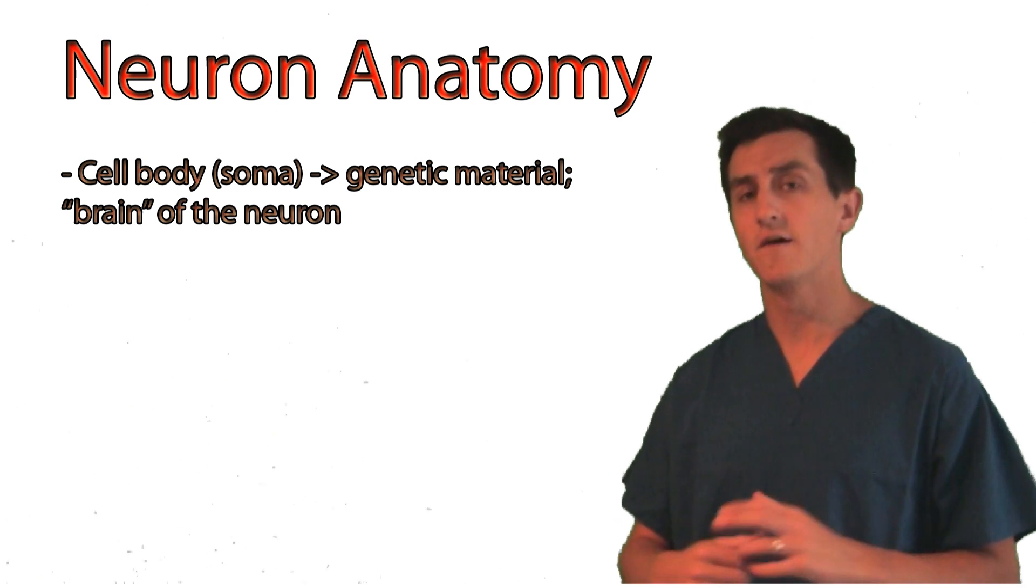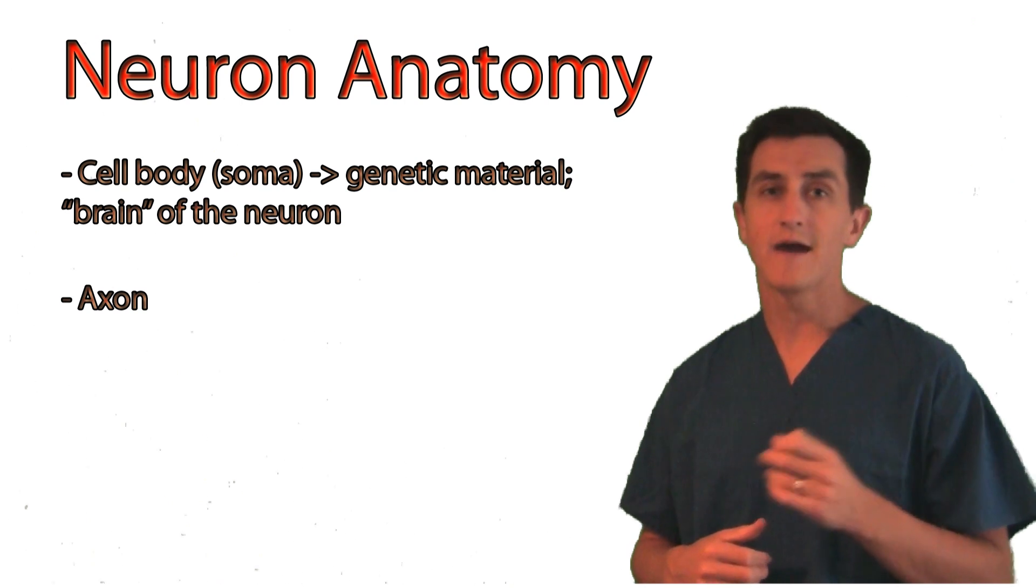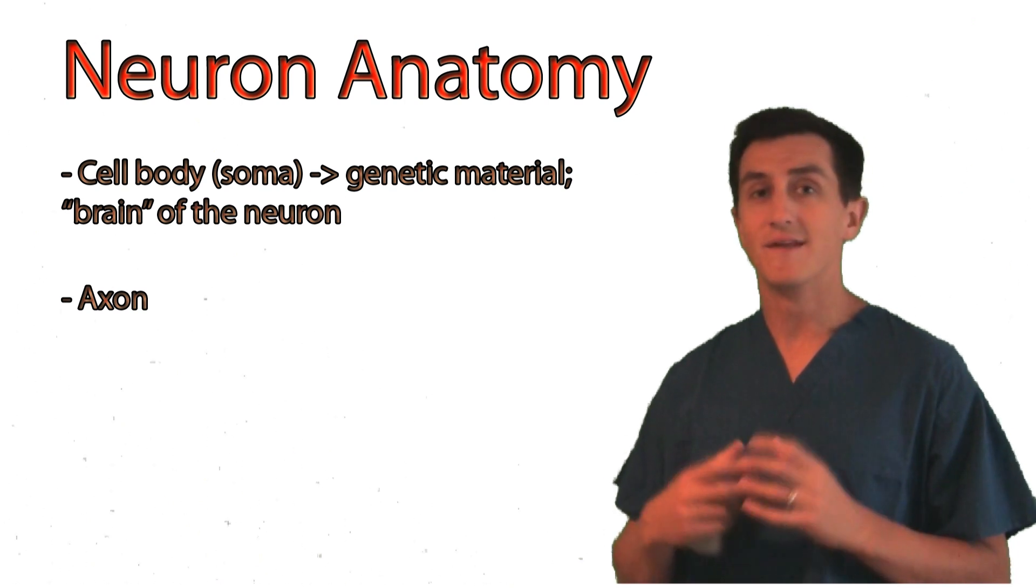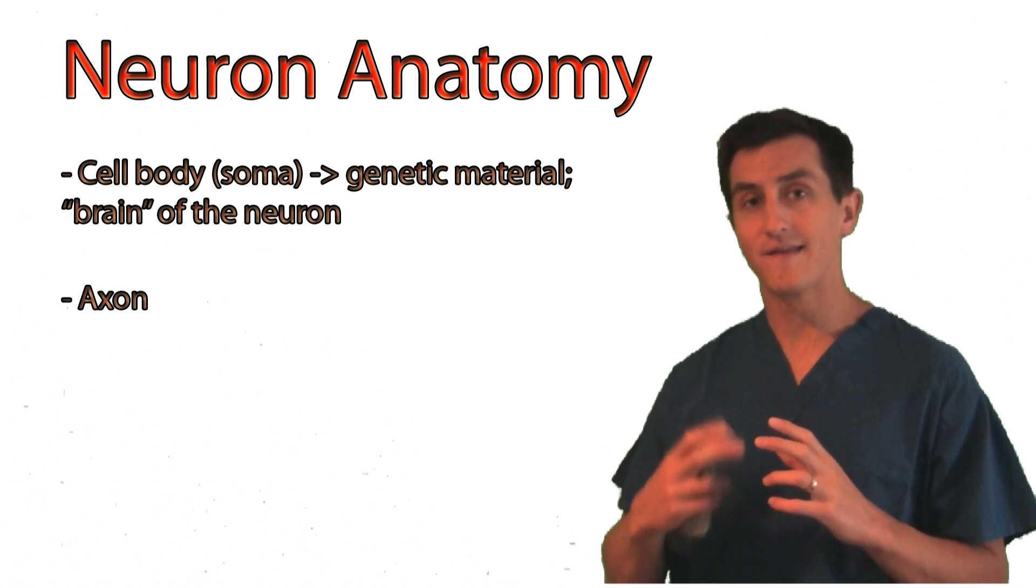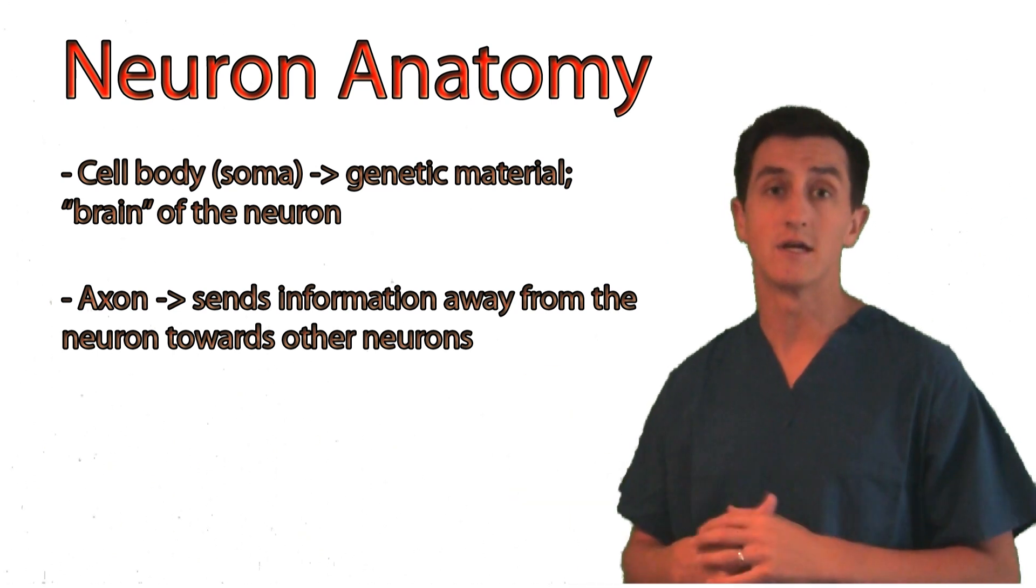Off of that cell body come two important things. The first thing is known as the axon, and the axon can be long or short, but it's the part of the neuron that sends information away from the cell body towards other neurons, allowing it to communicate.